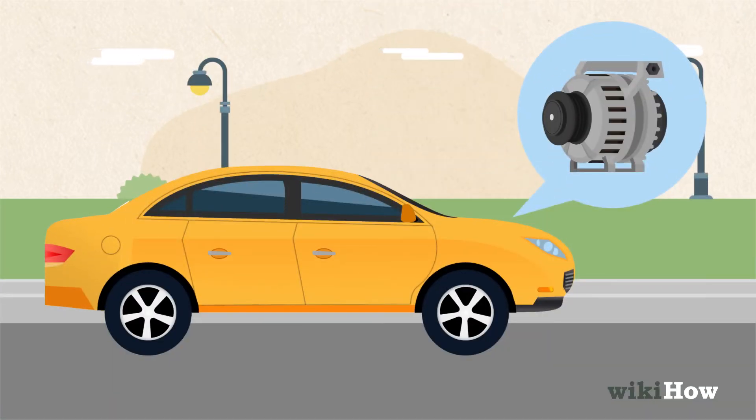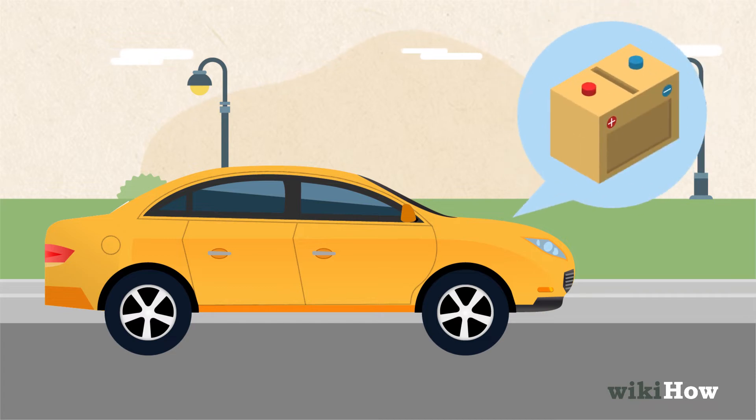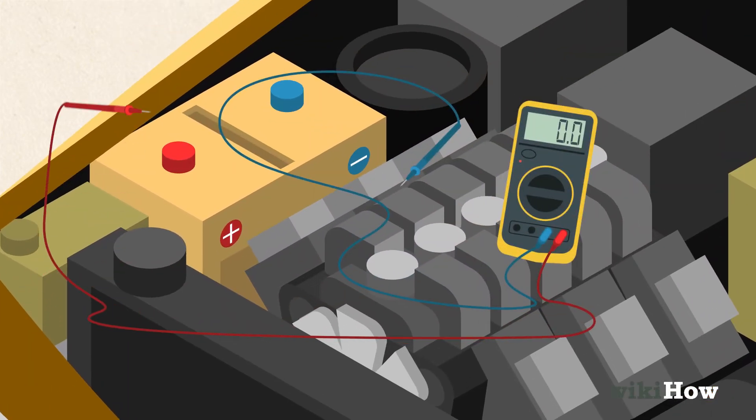Before you test the alternator, you'll need to make sure your car's battery is fully charged. Turn your car off, pop the hood, and connect the voltmeter's positive probe to the positive terminal on the battery and the negative probe to the negative terminal on the battery.